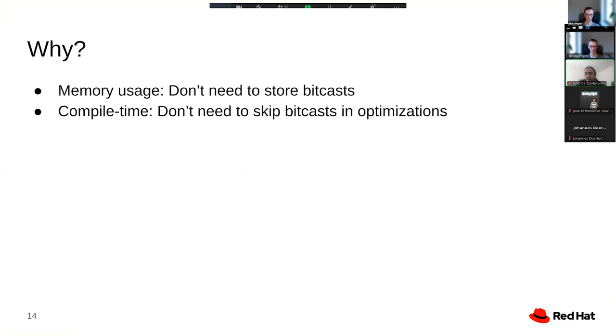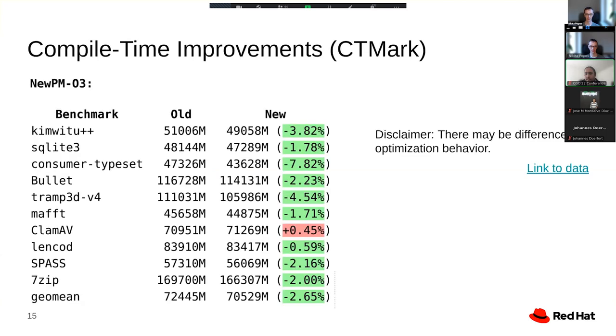I have a couple of preliminary numbers for that. These are compile time numbers for CT mark, using Clang on the LLVM test suite. And the result here is some reasonable improvements, like the geo mean is 2.6%. And on some benchmarks, we have something like 4, 5, even 8% improvements.